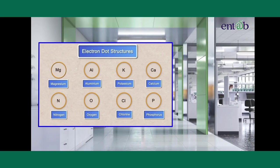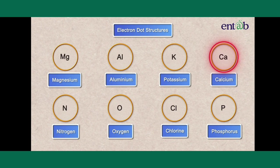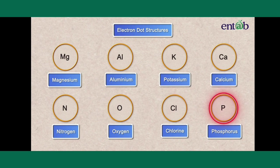Let's practice a few of these electron dot structures by drawing them for magnesium, aluminum, potassium, calcium, nitrogen, oxygen, chlorine and phosphorus yourself.